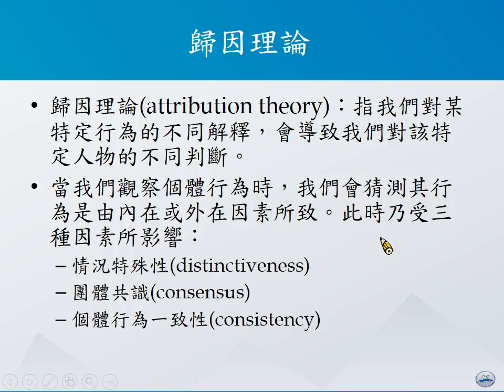有一种理论叫做归因理论（Attribution Theory），它想告诉我们为什么我们对于某些特定的行为会产生一些不同的解释，并进而导致我们对这些特定人物做出不同的判断。在归因理论之下，它认为当我们在观察个体行为的时候，我们会猜测其行为是由内在或者是外在因素所导致的。